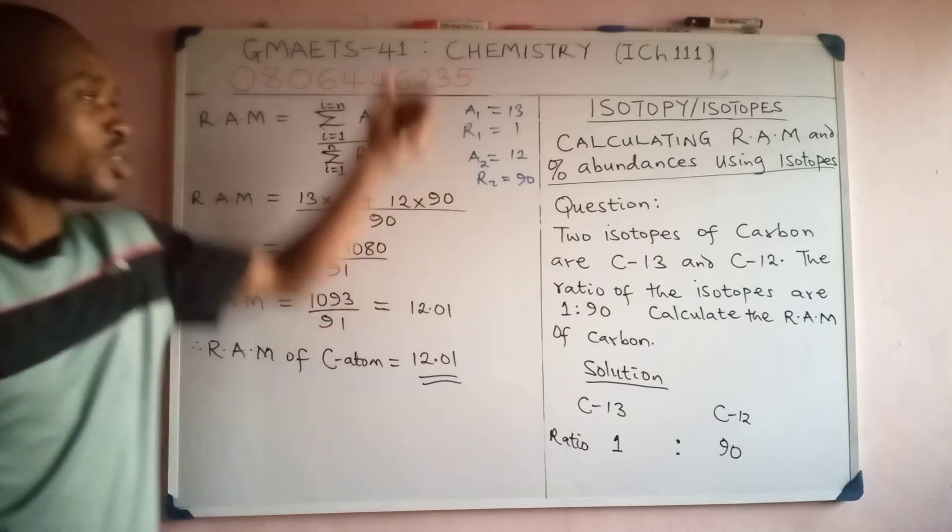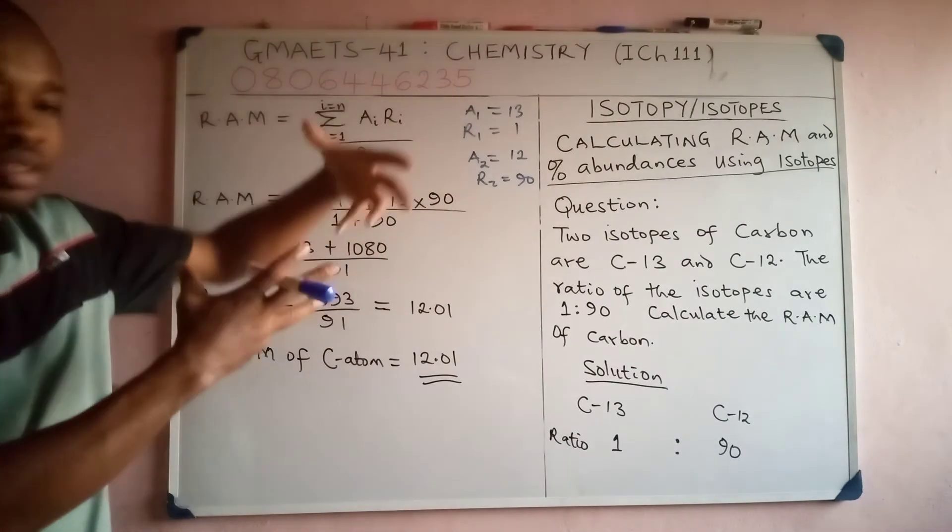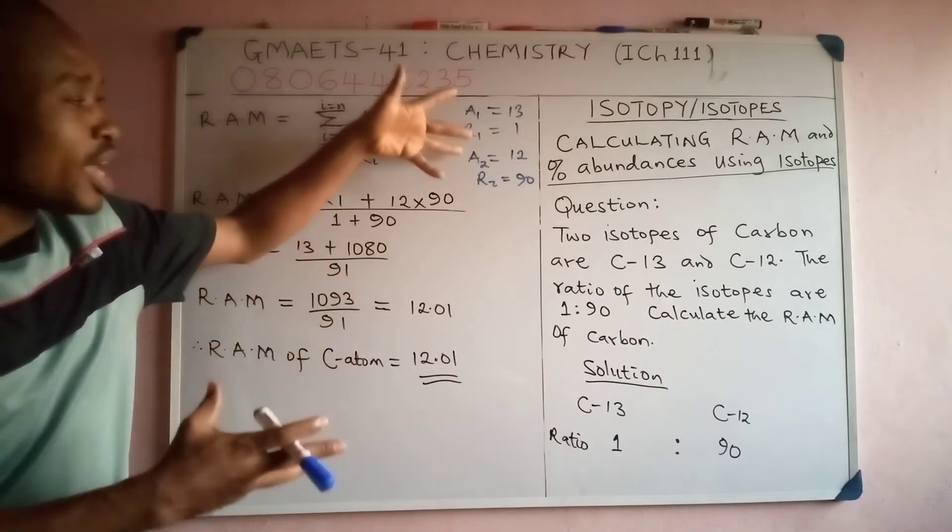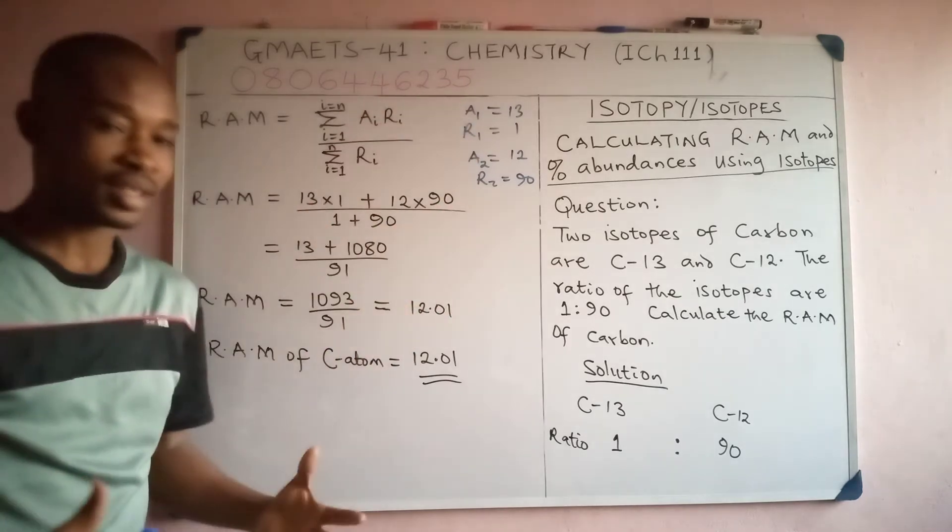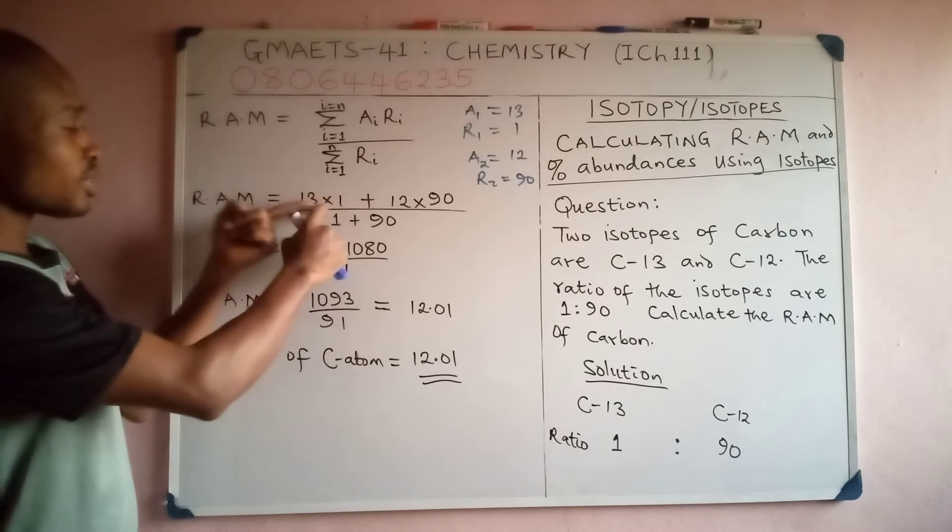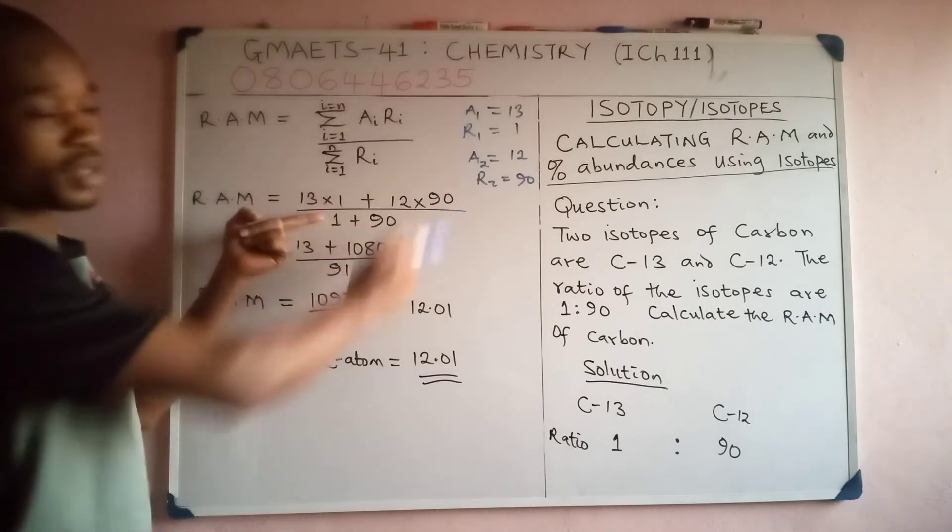With this, what we do is just multiply a1 times R1, that's the summation now, and then you do a2 times R2, then add both of them together. That's what we did here: 13 times 1 for a1 times R1, then 12 times 90 for a2 times R2, add them together, you have the summation.